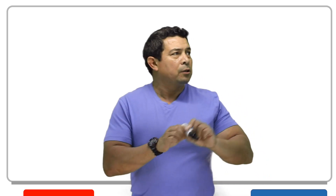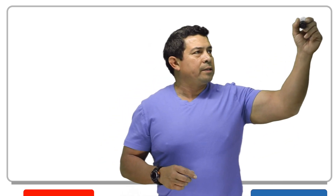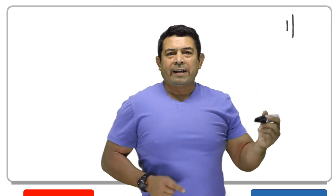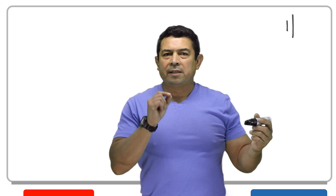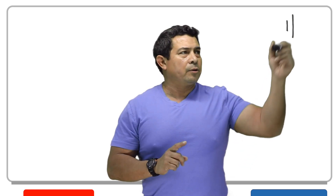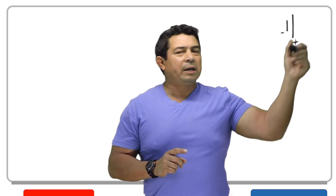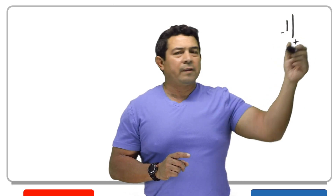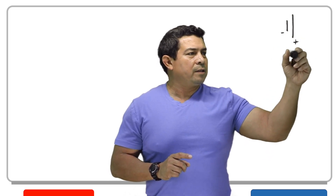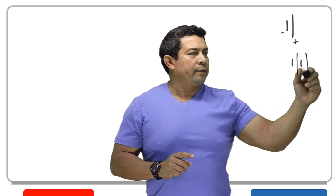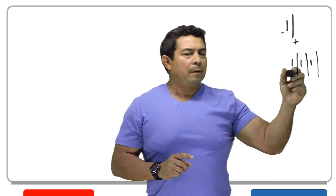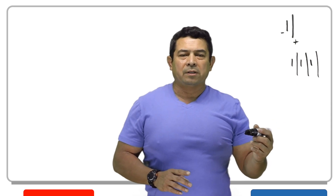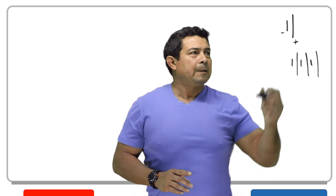So let me ask you this: what is this right here? That happens to be the symbol for a cell — just a single cell. You have the negative side, you have the positive side. There's your cathode and that is your anode. When you have this, it becomes a battery because you have several cells hooked up in series like this.